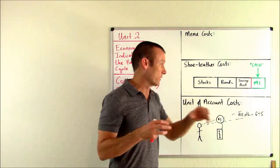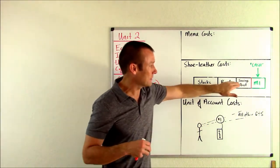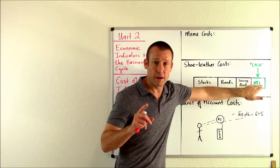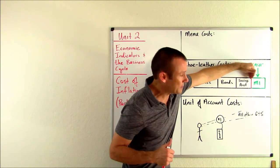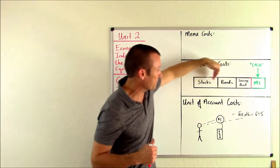We have them in stocks, bonds, savings accounts, and this thing called M1, which is your cash. Now you can see, I'm trying to make this big distinction between M1 and these three. Let's talk about these three first.